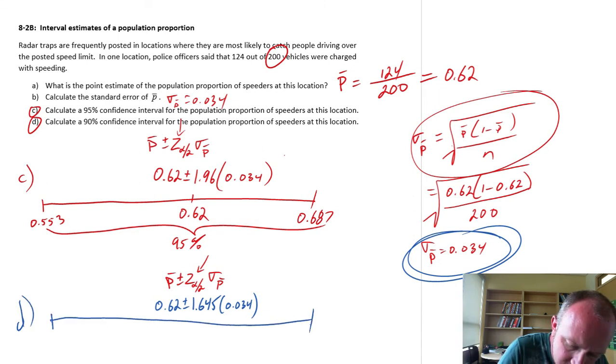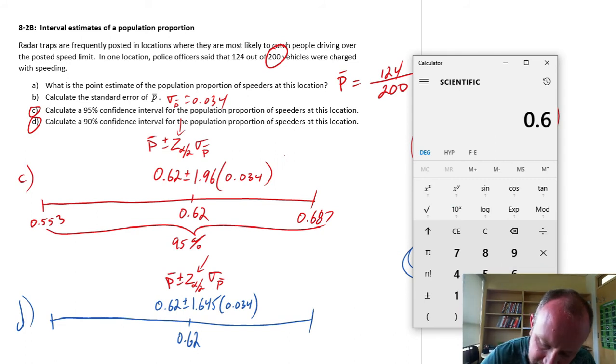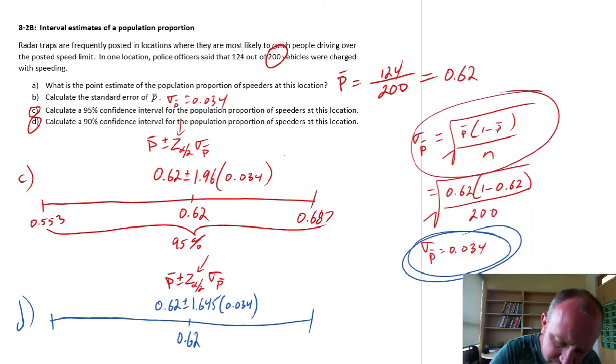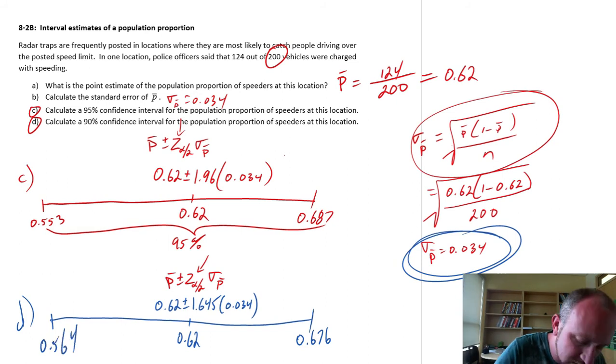There's our relevant critical value. So I can come back here and put this in, 1.645. Now for part D, here we can get those limits. The point estimate is in the middle of 0.62. The upper limit is plus the margin of error, which is 1.645 times 0.034, so that's 0.676. The lower limit is the point estimate minus the margin of error, which is 1.645 times 0.034, so 0.564.